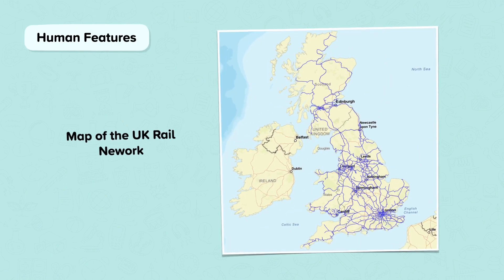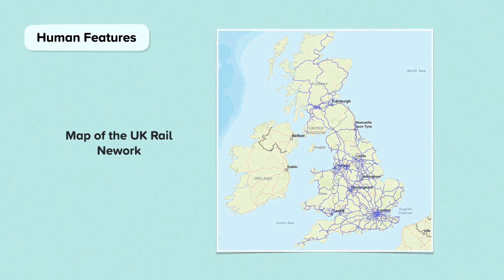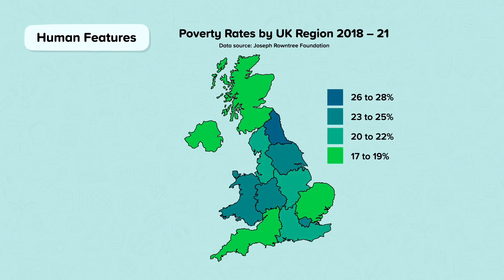Human maps show a range of data linked to human patterns and processes. For example, they can be used to show population density, migration patterns and transport routes, such as this map of the UK Rail Network. Some maps show human features that are experienced rather than seen. Examples of this are poverty rates, life expectancy and birth and death rates.